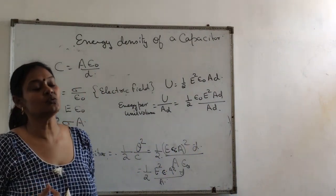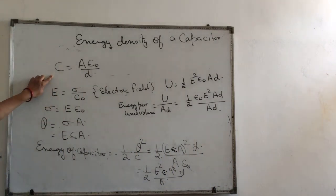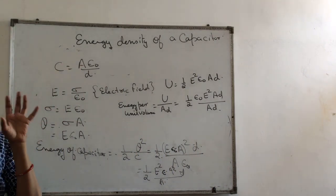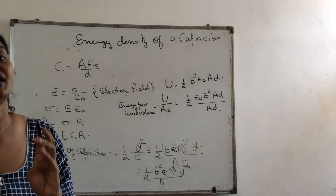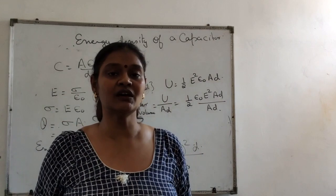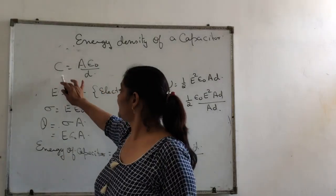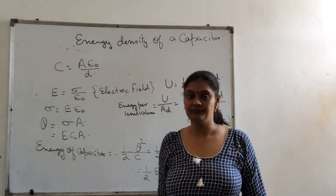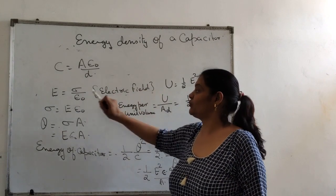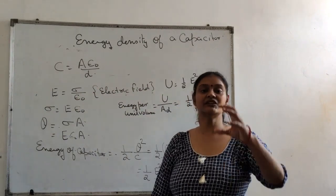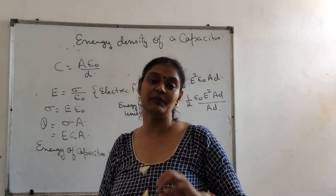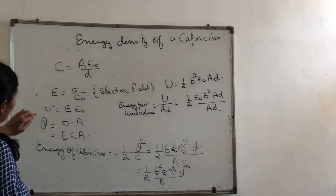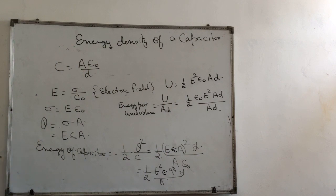So let us consider a capacitor whose capacitance is C. Of course, A is the area between the plates of the capacitor, D is going to be the distance between the plates. So the capacitance of the capacitor will be A epsilon naught upon D.